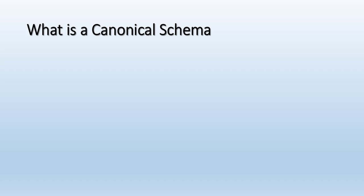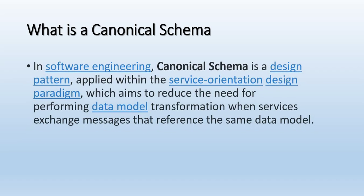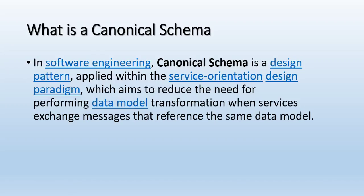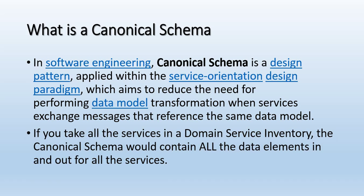What is a Canonical Schema? The definition is, in software engineering, a Canonical Schema is a design pattern applied within a service-oriented design paradigm, which aims to reduce the need for performing data model transformation when services exchange messages that reference the same data model. If you take all of the services within a domain service inventory, the Canonical Schema would contain all of the data elements in and out for all of the services.